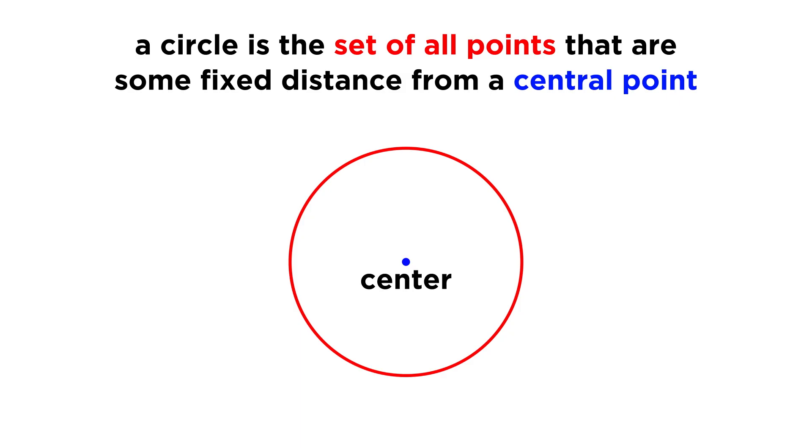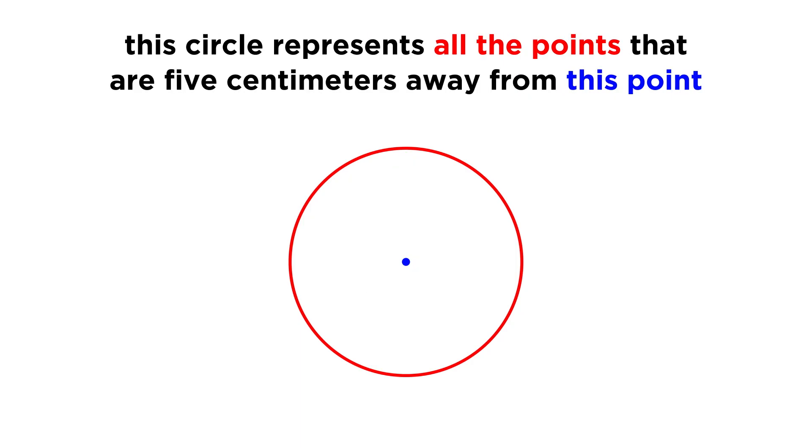These are the center of the circle, and then a specific distance from that point, like five centimeters. If we draw all the points in this plane that are five centimeters away from this central point, we get a circle.